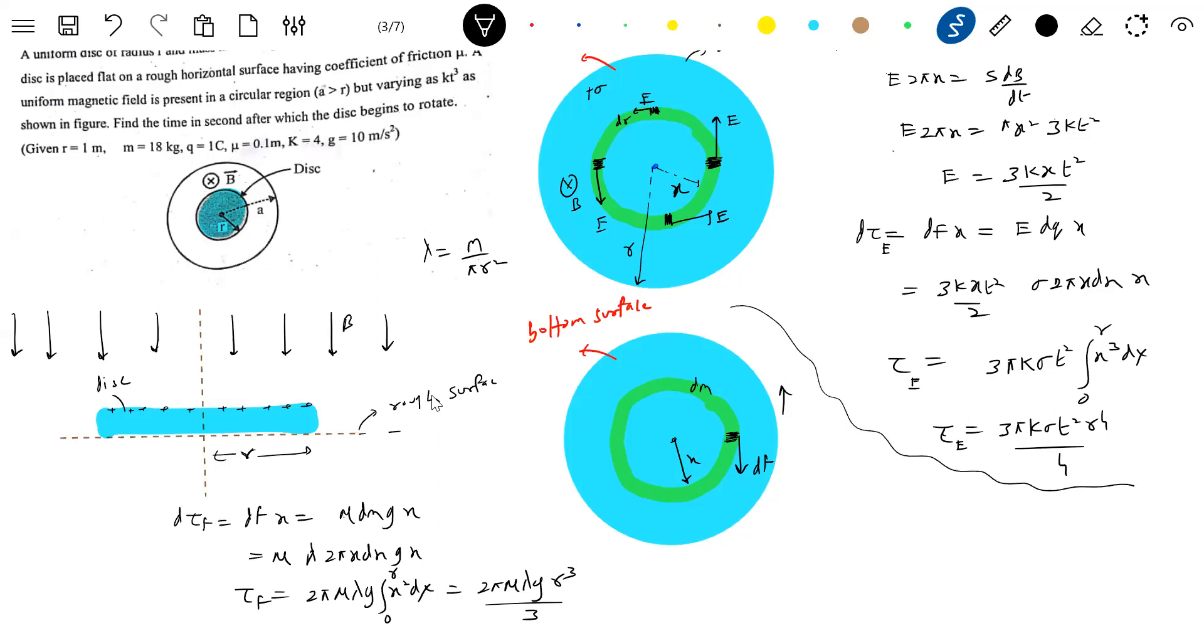We have this much of torque now. Torque due to friction will act. So they are asking find the time in seconds when the disc begins to rotate. When will the disc start rotating? The moment when the torque due to induced electric field becomes greater than or equal to torque due to friction, it will start rotating. Till then it will be at rest. If it was a smooth surface, what would happen? The moment you switch on the magnetic field from there, it will start accelerating. When will the disc start rotating after a certain time? When this is greater than or equal to torque due to friction.